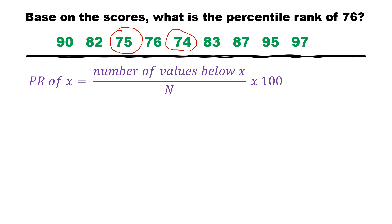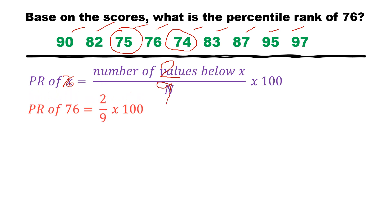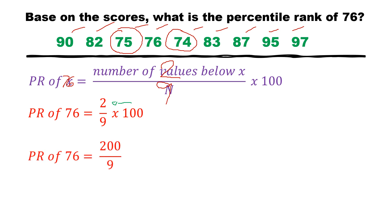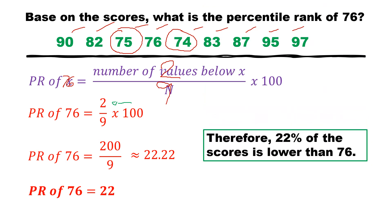So the percentile rank of 76 is equal to 2 — since there are 2 scores smaller than 76 — divided by n, the total number of scores, which is 9. So PR of 76 = 2 divided by 9 times 100. Multiplying 100 by 2 gives 200, then dividing 200 by 9 gives approximately 22.22. Rounding to a whole number, the percentile rank of 76 is 22, implying that 22% of the scores is lower than 76.